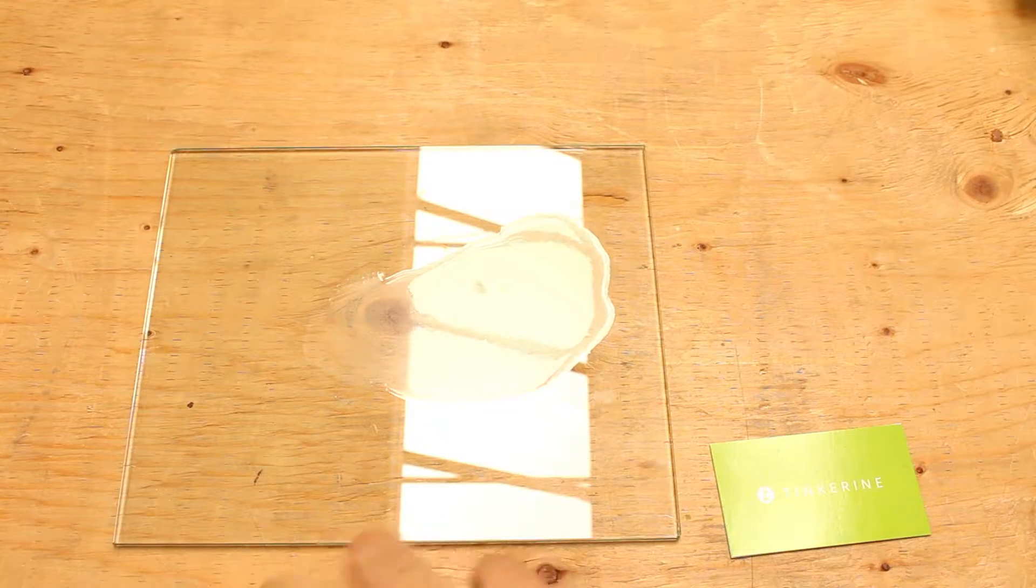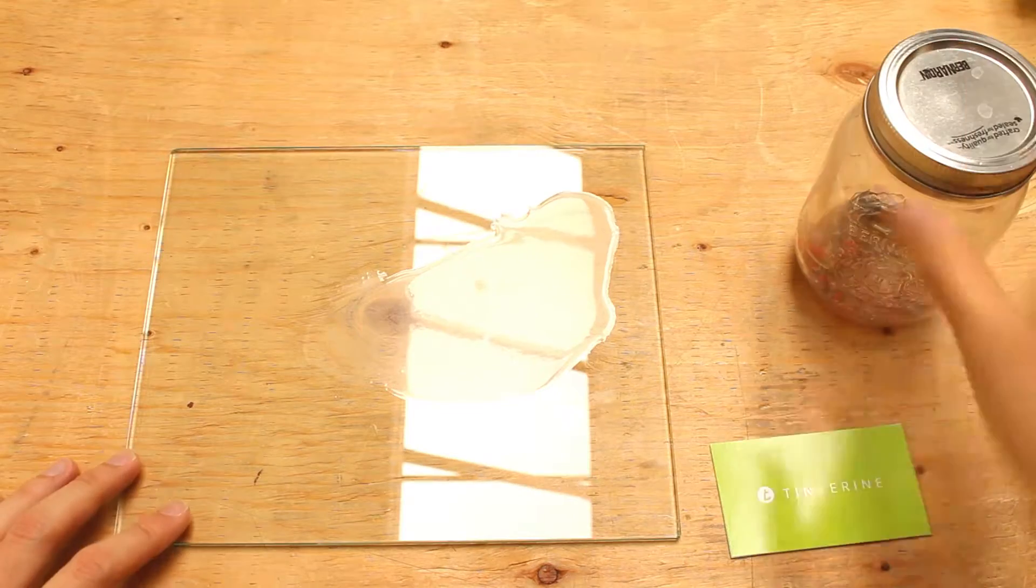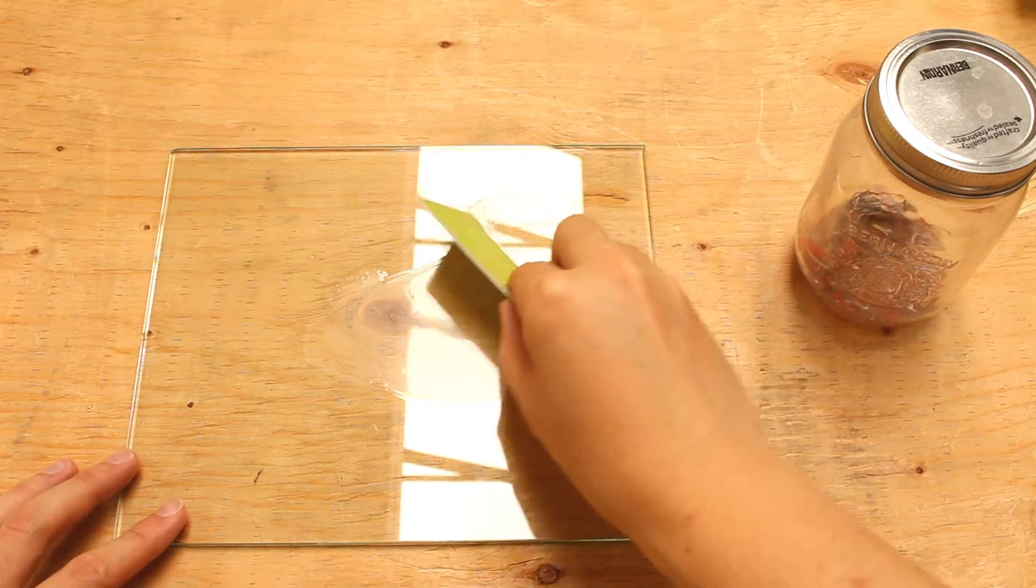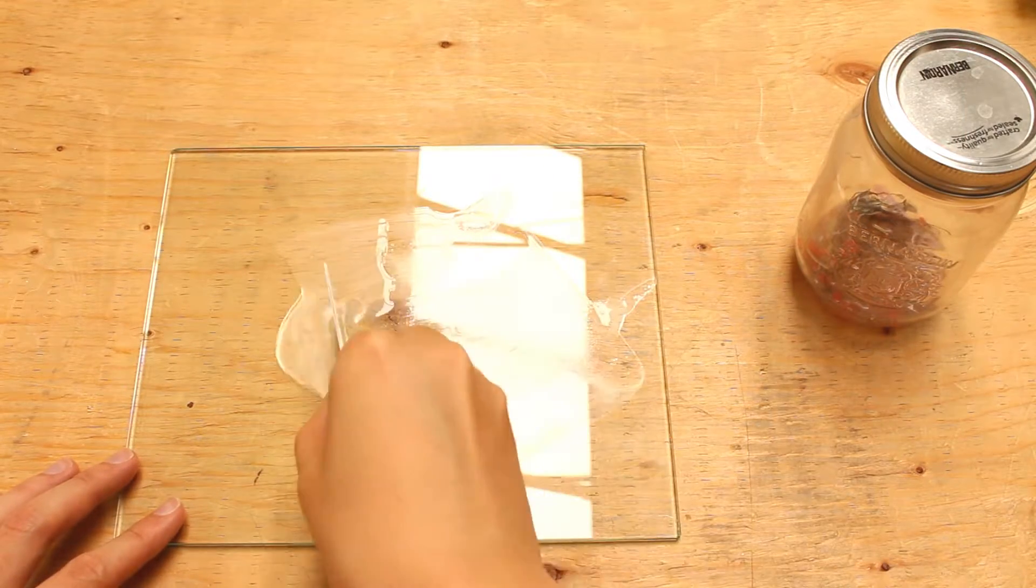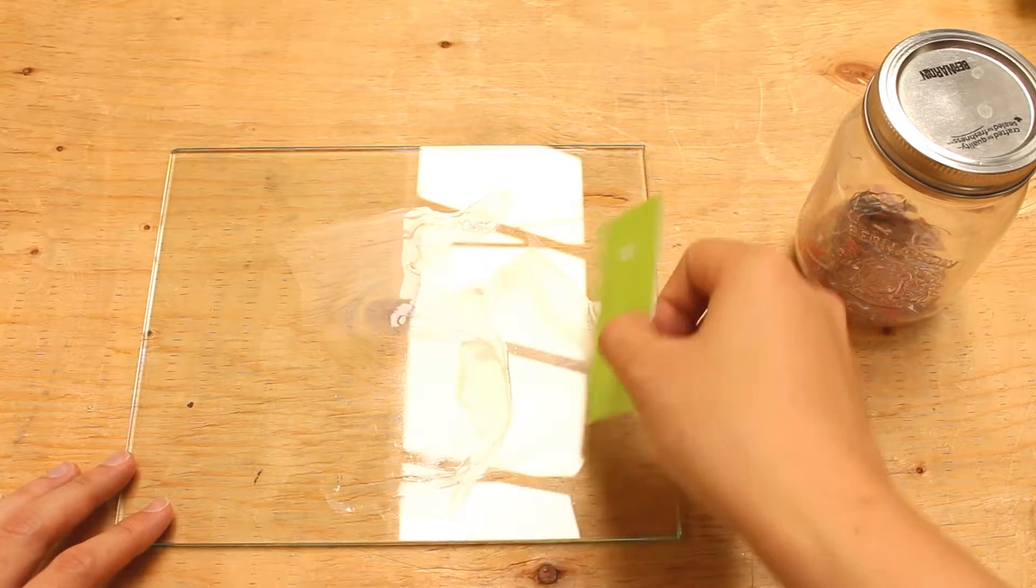This time instead of a pallet knife, I'm going to try using a business card to spread the sludge. Since a business card has a larger surface area, it is easier to spread the sludge around.